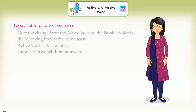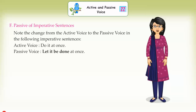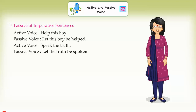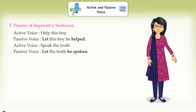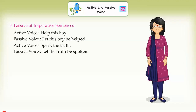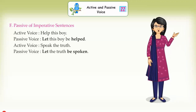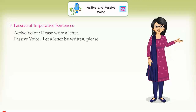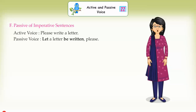Passive of imperative sentences. Note the change from the active voice to the passive voice in the following imperative sentences. Active: 'Do it at once.' Passive: 'Let it be done at once.' Active: 'Help this boy.' Passive: 'Let this boy be helped.' Active: 'Speak the truth.' Passive: 'Let the truth be spoken,' or 'You are advised to speak the truth.' Active: 'Please write a letter.' Passive: 'Let a letter be written, please,' or 'You are requested to write a letter.'